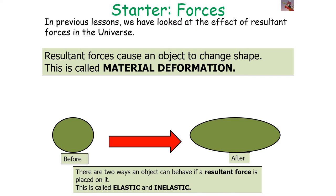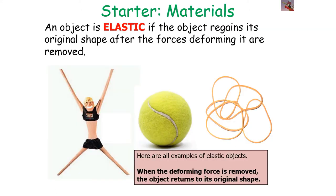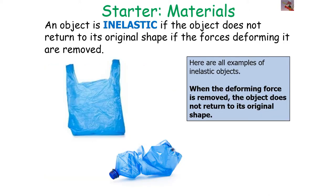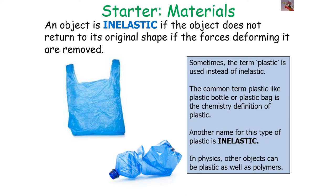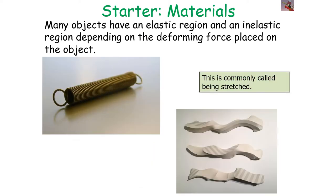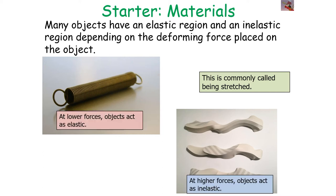There are two ways an object can behave if a resultant force is placed upon it: elastic behavior or inelastic behavior. An object is elastic if it regains its original shape after the forces deforming it are removed — it will return to its original size and shape. An object is inelastic if it does not return to its original shape when the deforming forces are removed — it will stay deformed. Sometimes the term 'plastic' is used instead of inelastic, but that can get confusing when considering plastic in the sense of a polymer.